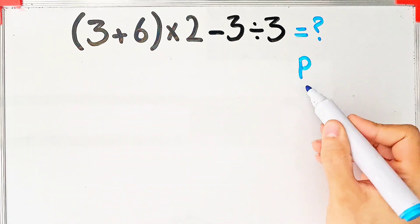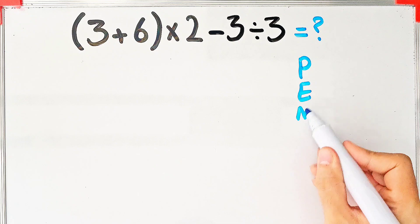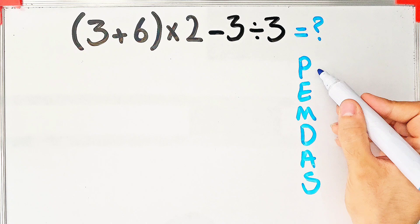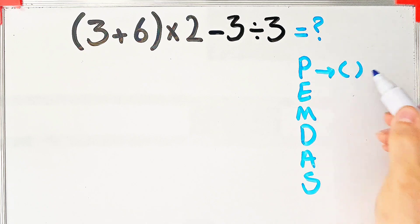To solve this question, we need to follow the order of operations, which is PEMDAS. PEMDAS shows the priority of the mathematical operations. If you don't pay attention to this rule, you get the wrong answer. In this rule, P stands for parentheses.